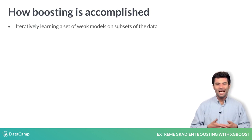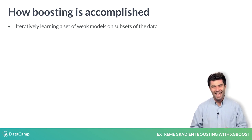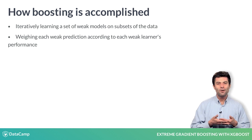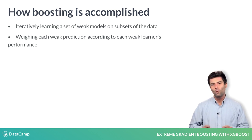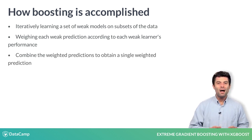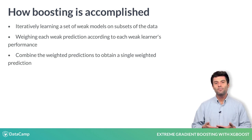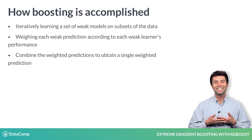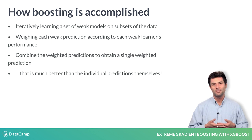By iteratively learning a set of weak models on subsets of the data you have at hand and weighting each of their predictions according to each weak learner's performance. You then combine all of the weak learner's predictions multiplied by their weights to obtain a single final weighted prediction that is much better than any of the individual predictions themselves.